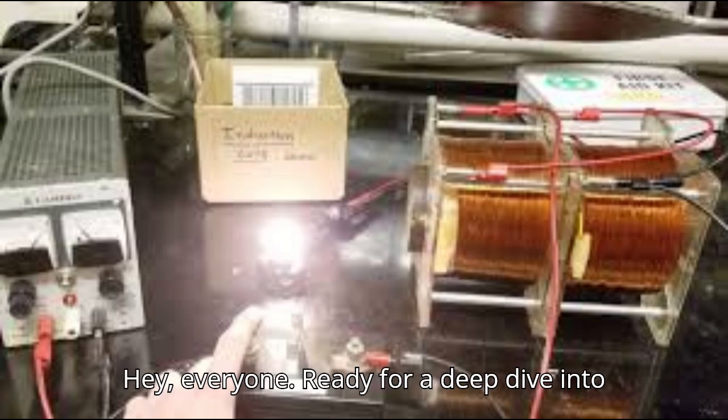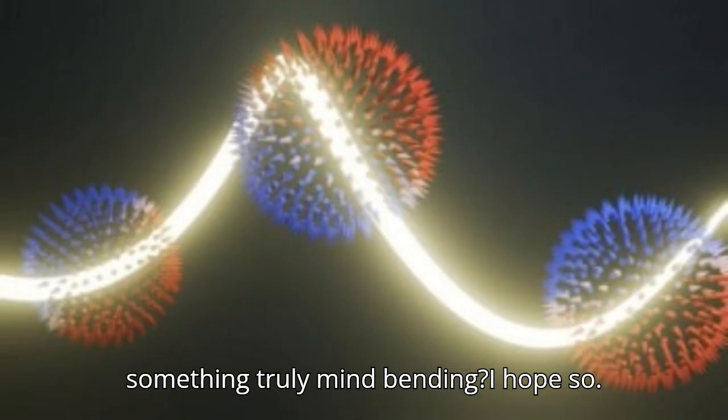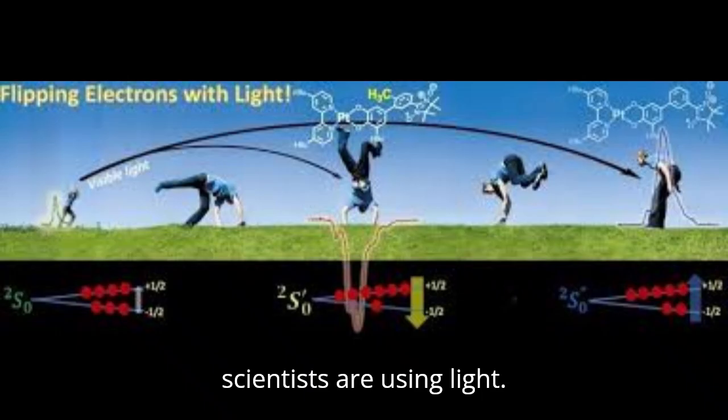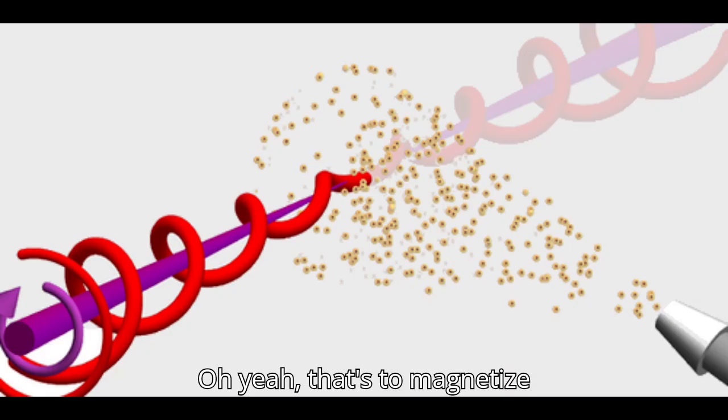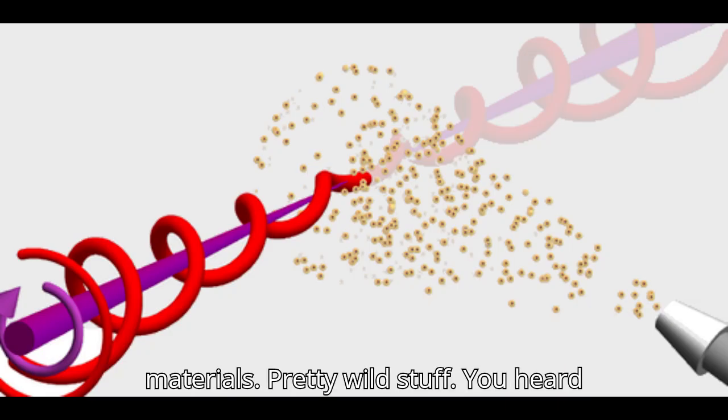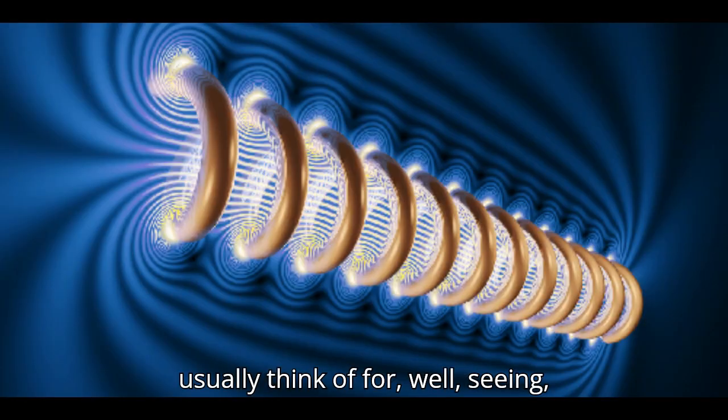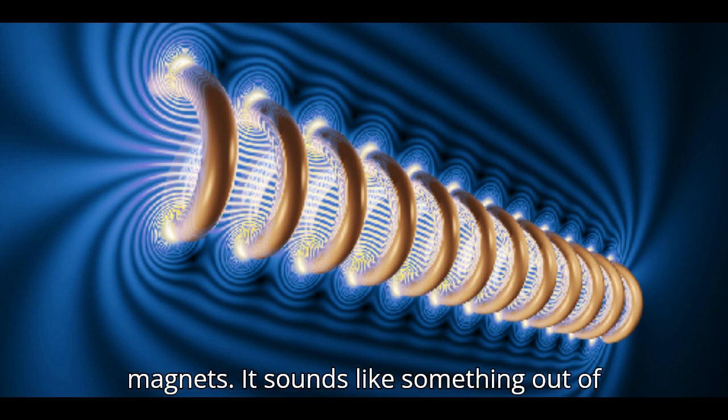Hey everyone, ready for a deep dive into something truly mind-bending? Today we're going to be looking at how scientists are using light to magnetize materials. Pretty wild stuff. You heard that right - light, the stuff we usually think of for seeing, is being used to create magnets.